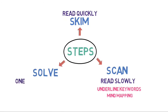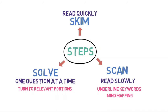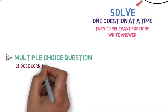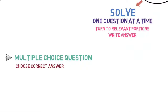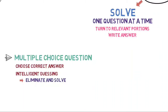Step 3: Solve. Take one question at a time. Study the question thoroughly. Turn to the relevant portion of the passage, read it again, and write the answer accordingly. For MCQ-based questions, choose the correct answers from the given options. In case you are not sure about the answer, you may use a technique called intelligent guessing — eliminate the wrong ones, re-read the relevant part of the passage, and try to choose the correct one.